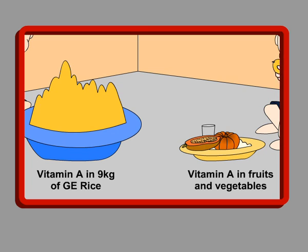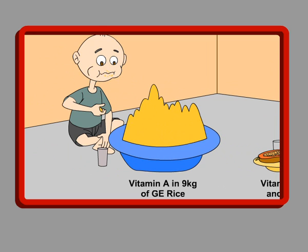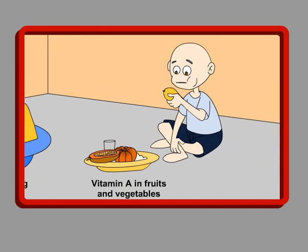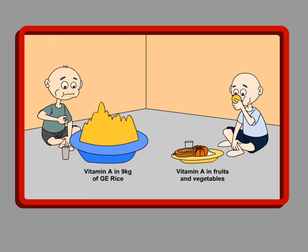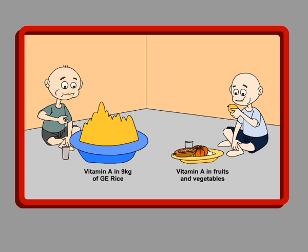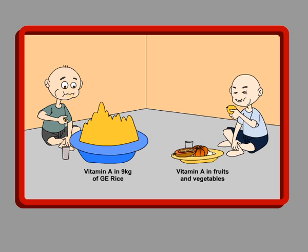Companies are also trying to commercialise a GE rice called golden rice, which is supposed to be fortified with vitamin A. But it has been estimated that a person would have to eat about 9 kilograms of golden rice to get her daily supply of vitamin A. We have enough sources of vitamin A in the world — from fruits and vegetables — but those who suffer from night blindness caused by vitamin A deficiency are often the poor who have no access to these nutritional food sources.